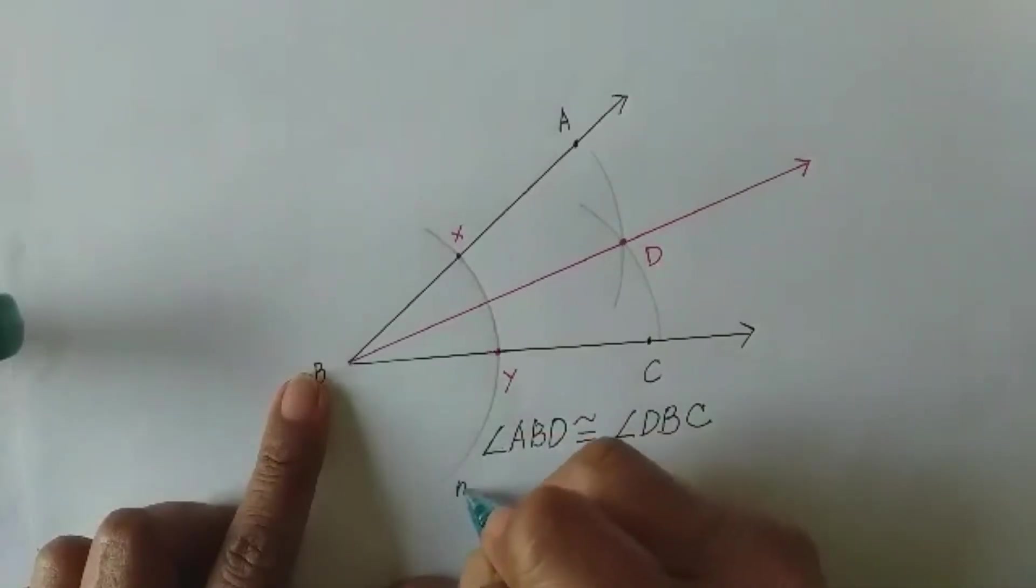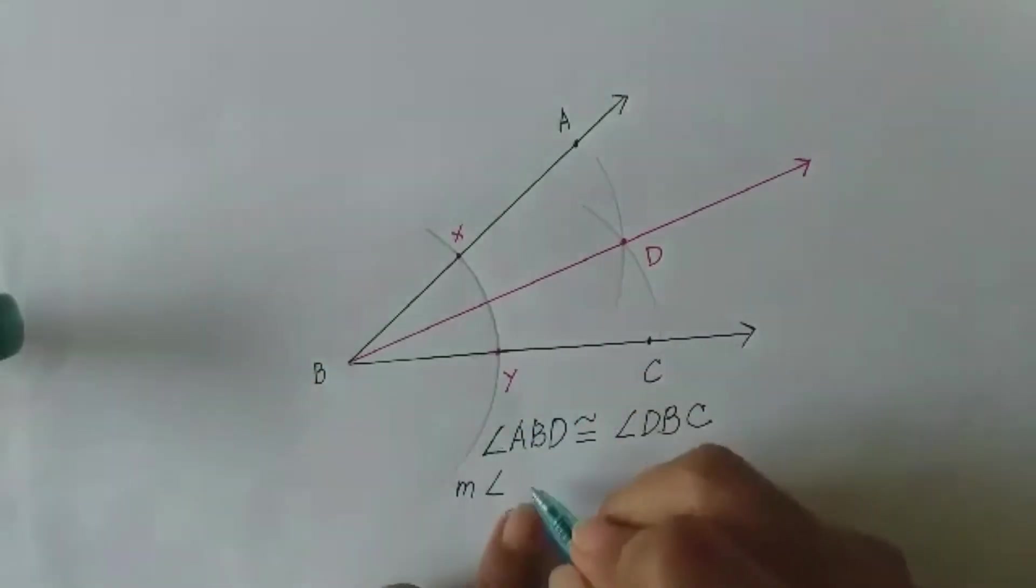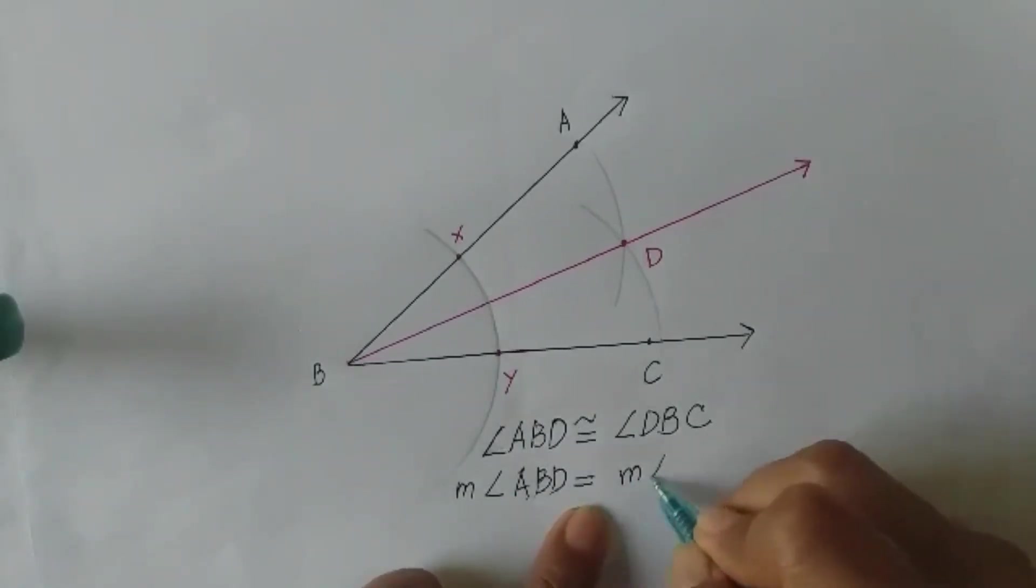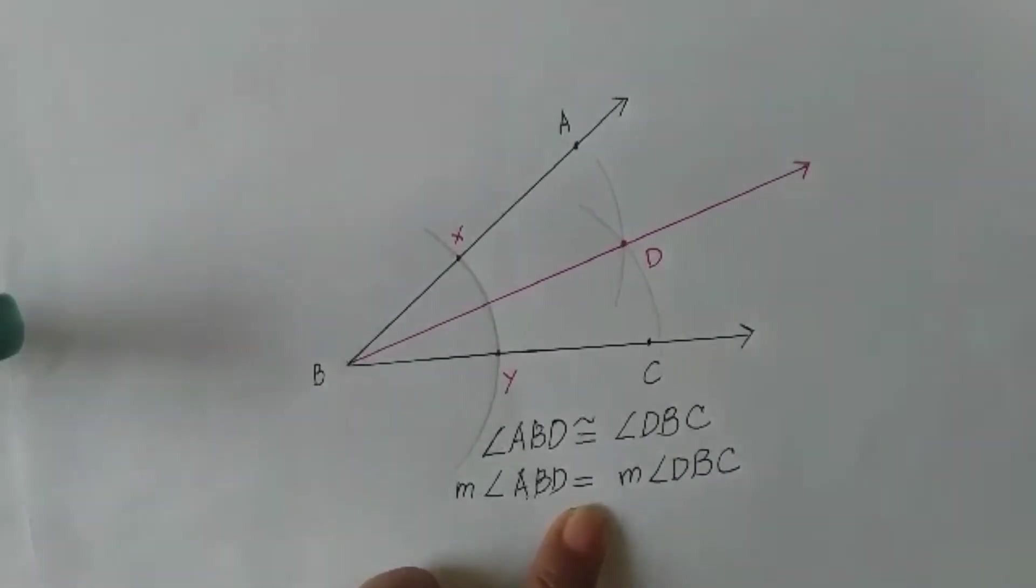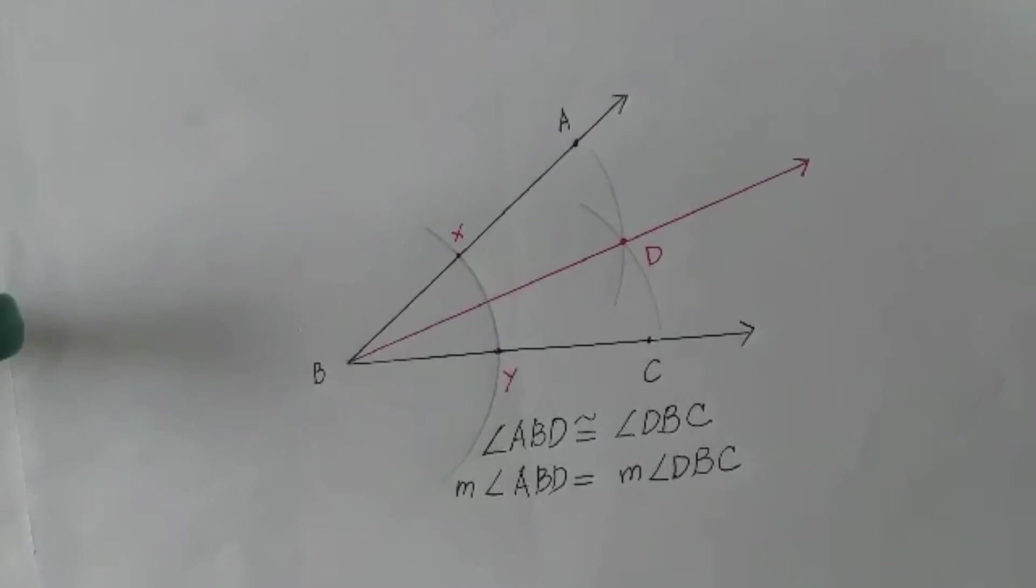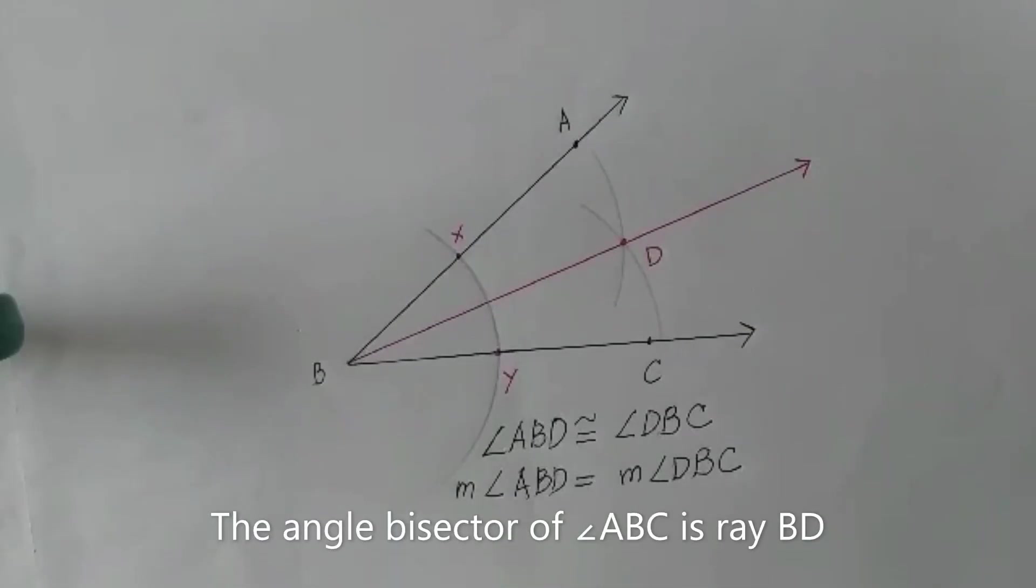What makes us say that they are congruent? Earlier we measured them. So we can say that they are congruent because the measure of angle ABD is equal to the measure of angle DBC. Therefore we say now that the angle bisector of angle ABC is ray BD.